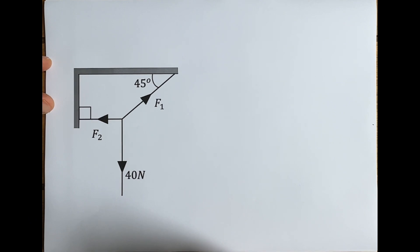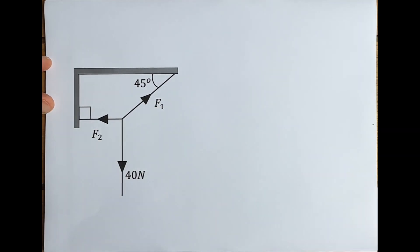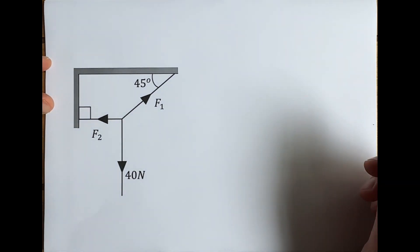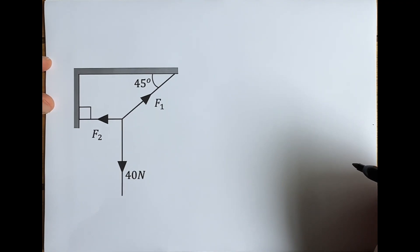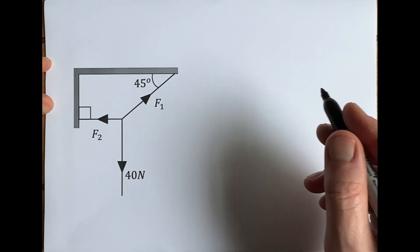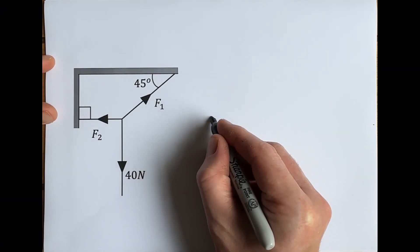There's zero resultant force here, so that's the principle we're working from. We're going to try and work out F1 and F2. Because we know that these forces are in equilibrium and the resultant force is zero, when we line these forces up in a vector triangle they should form a closed triangle, which proves that there's no resultant force.